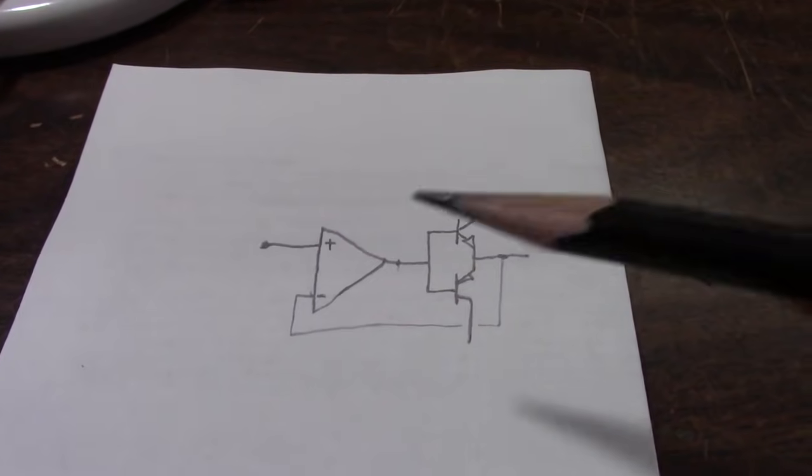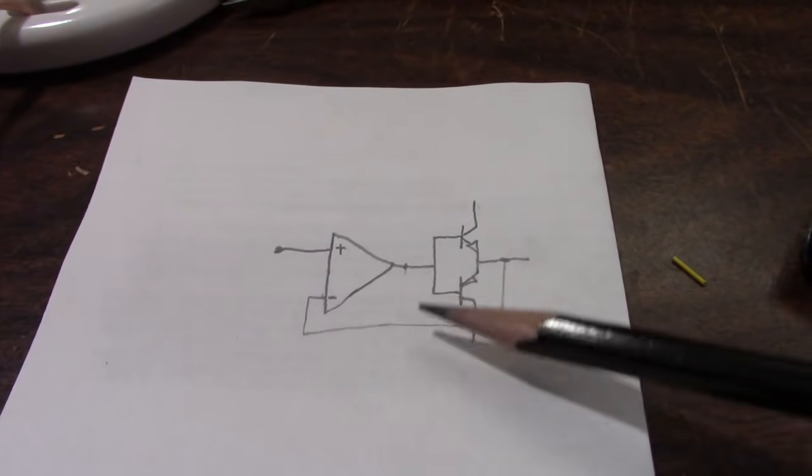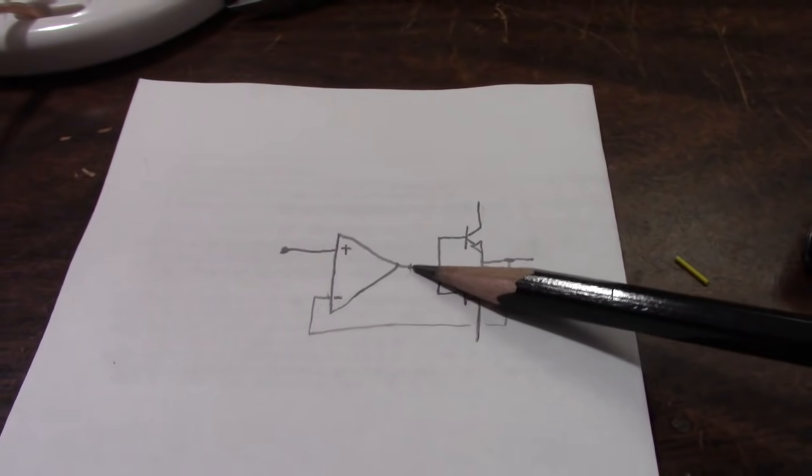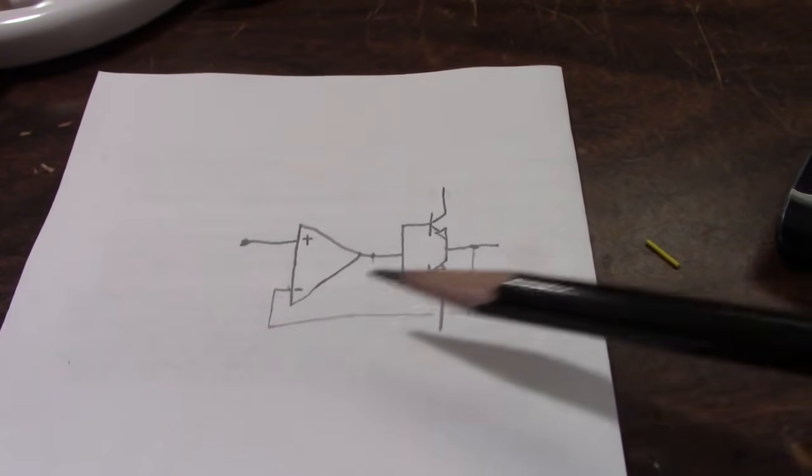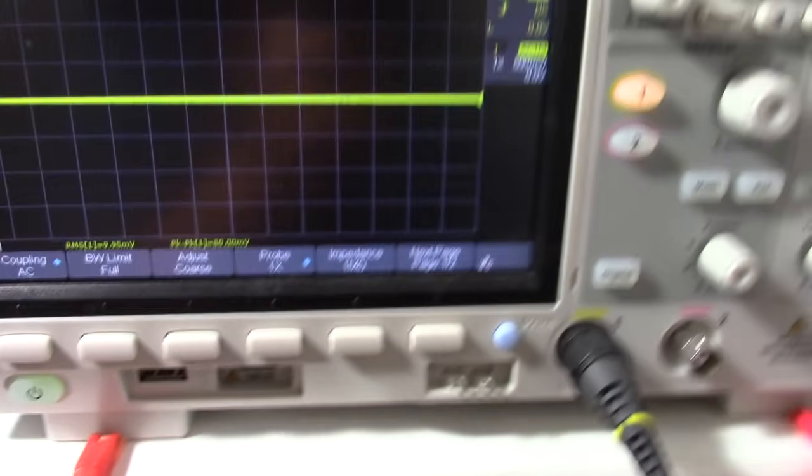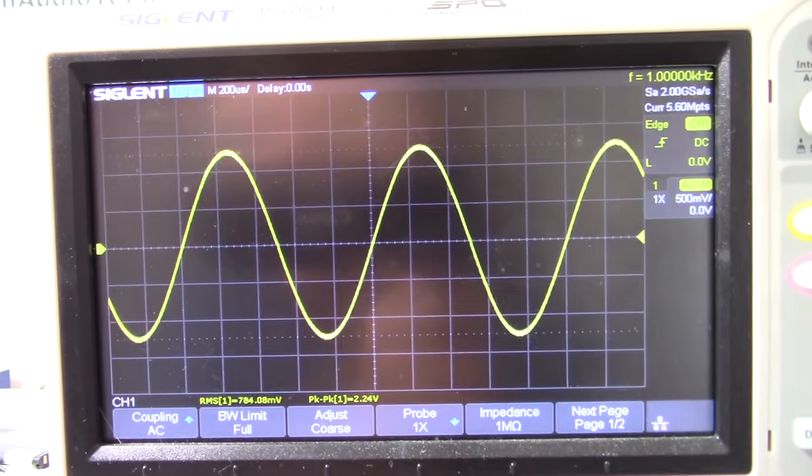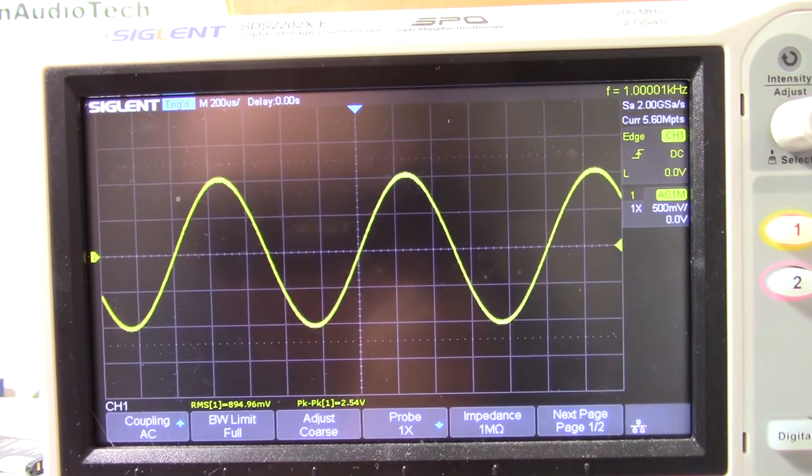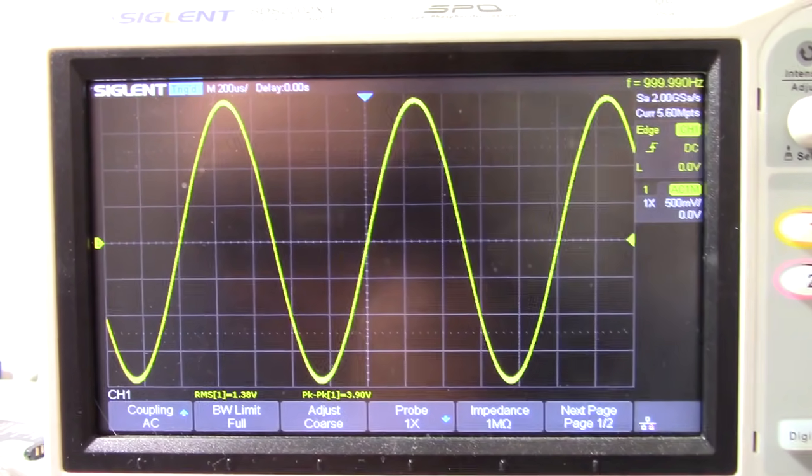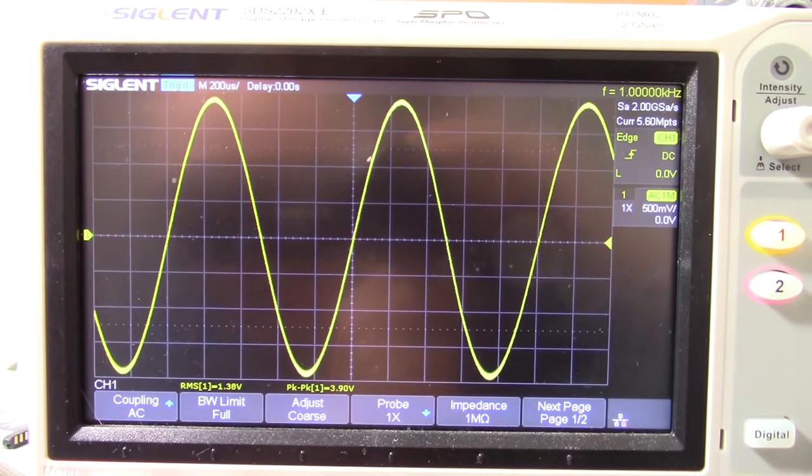Okay, so I made a change here. Didn't change any components, I just moved the negative feedback from this point to the output of the amplifier. And let's see what it looks like now. Wow, we have a perfect looking waveform now. But what does it sound like? Let me hook the speaker up and we'll come right back.